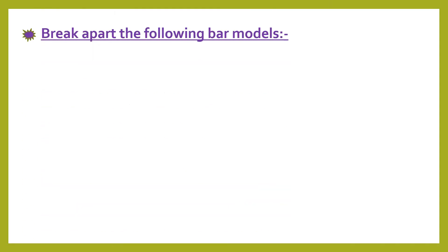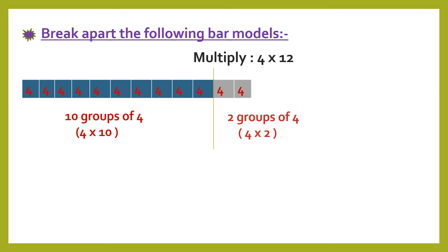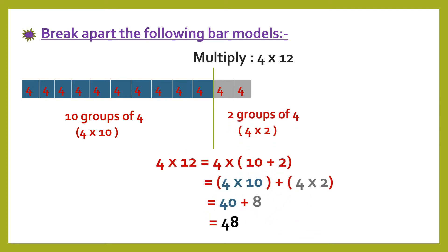Breaking apart using models. Now I'm multiplying 4 by 12. Here the 12 we will split into 10 plus 2. I have 10 groups of 4: 4 by 10, and 2 groups of 4: 4 by 2. 4 by 10 equals 40 and 4 by 2 equals 8. Then add the products: 40 plus 8 equals 48.